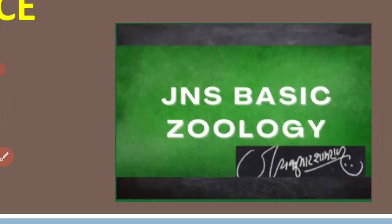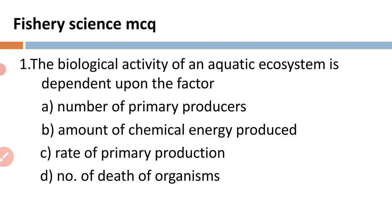The first question on fishery science: the biological activity of an aquatic ecosystem is dependent upon which factor? A) number of primary producers, B) amount of chemical energy produced, C) rate of primary production, and D) number of deaths of organisms. The biological activity of any aquatic ecosystem is based on the rate of primary production. So the rate of primary production is the correct option.